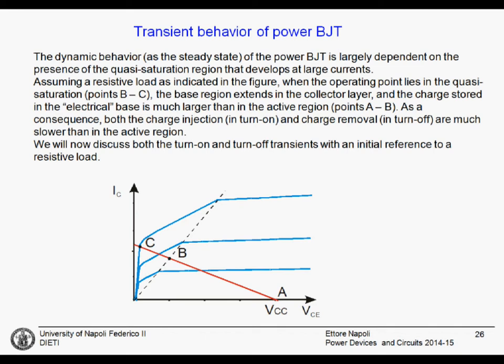Similar to what we have seen and discussed for the PIN diode, the dynamics of the BJT are very much dependent on the quasi-saturation region — that is, the presence of a large amount of carriers stored into the collector region. The analysis is slightly different depending on whether we assume a resistive load or an inductive load.